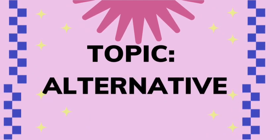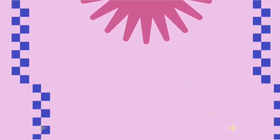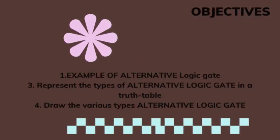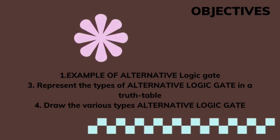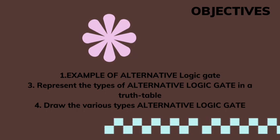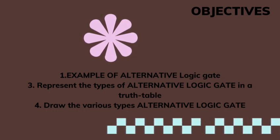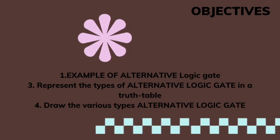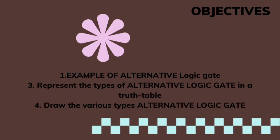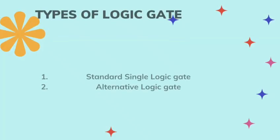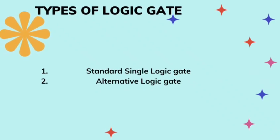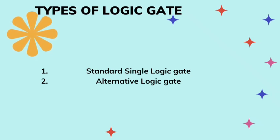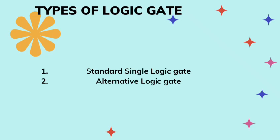Good day students and welcome to computer science class. The topic today is alternative logic gates. The objectives for the class are: examples of alternative logic gates, representing the types of alternative logic gates in a truth table, and drawing the various types of alternative logic gates. Before we get started, let us have a quick review of what we discussed earlier that led us to this topic.